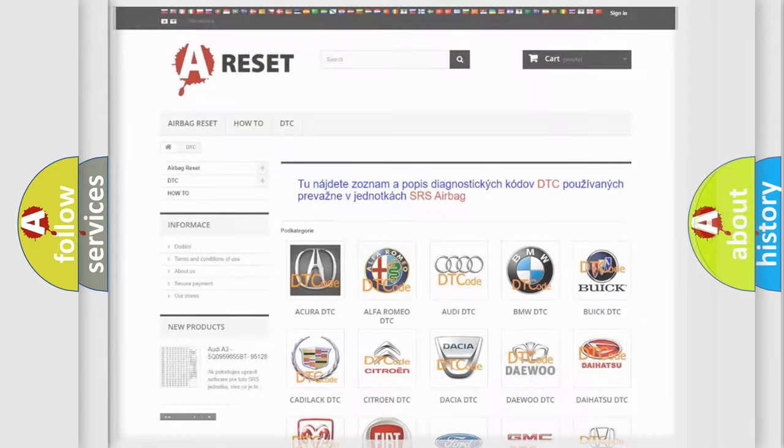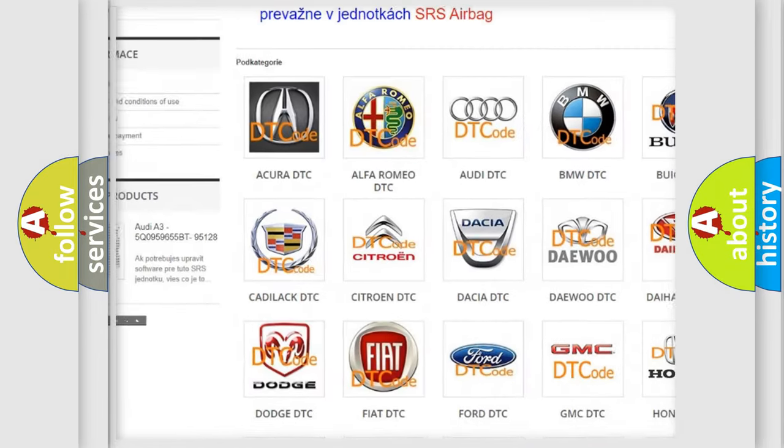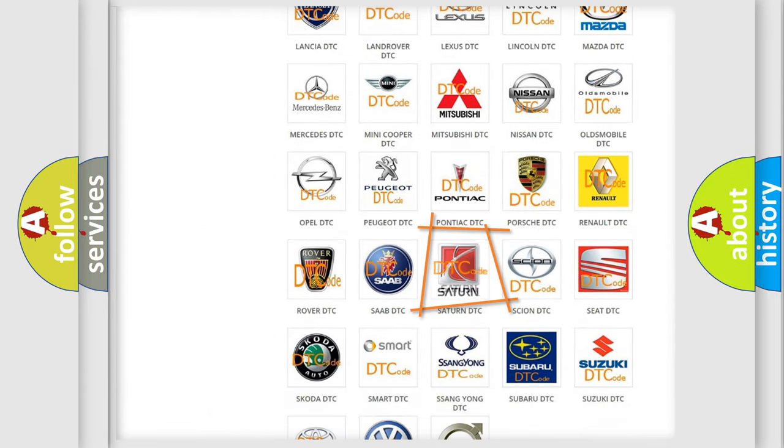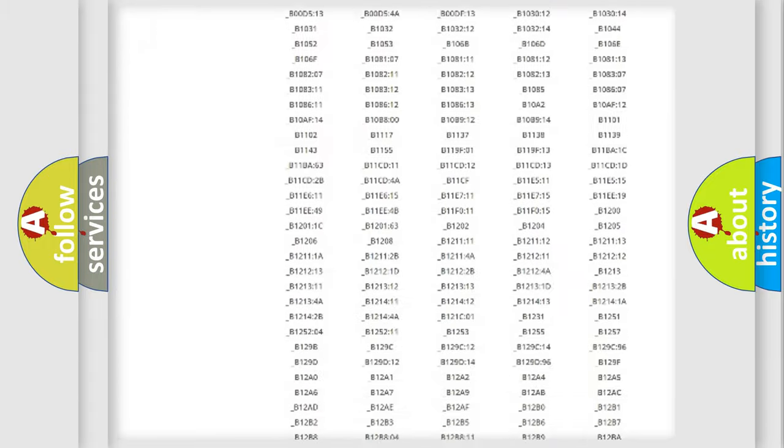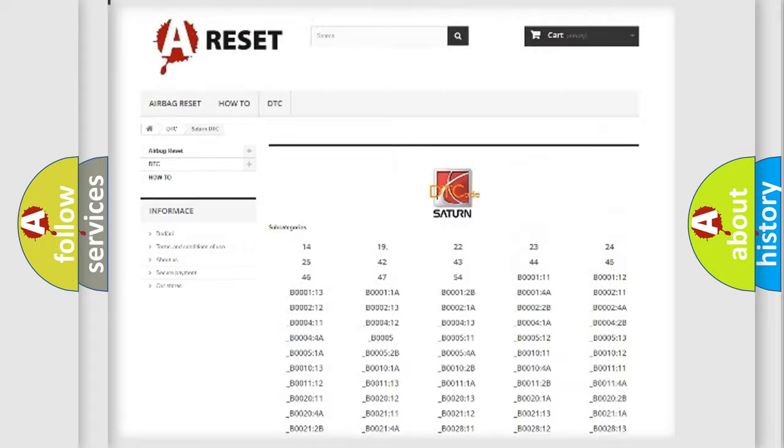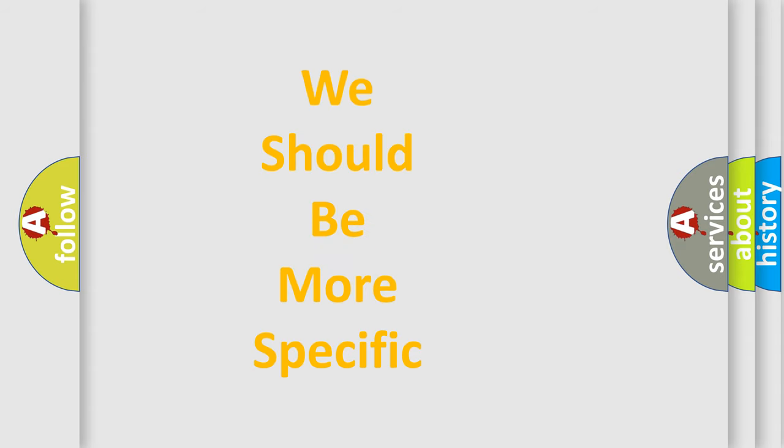Our website airbagreset.sk produces useful videos for you. You do not have to go through the OBD2 protocol anymore to know how to troubleshoot any car breakdown. You will find all the diagnostic codes that can be diagnosed in Saturn vehicles, and also many other useful things. The following demonstration will help you look into the world of software for car control units.